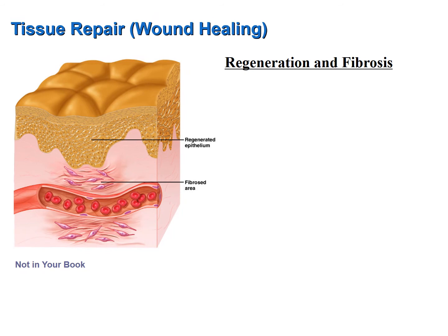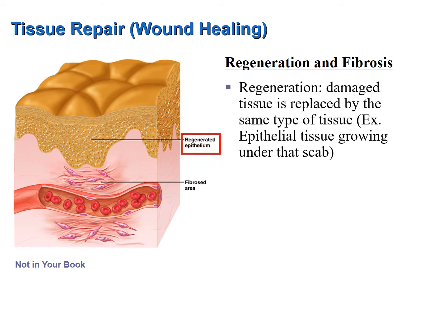At the end of the wound healing process, all of the cells that were destroyed have been replaced with new cells. This replacement comes in two forms: regeneration and fibrosis. If the tissue that was destroyed is replaced by the same type of cells and tissues, this is called regeneration. For example, epithelial tissue that was destroyed being replaced by epithelial tissue is regeneration.